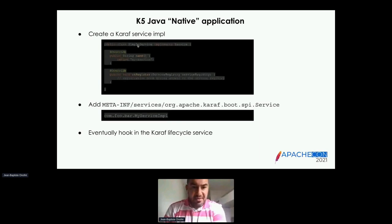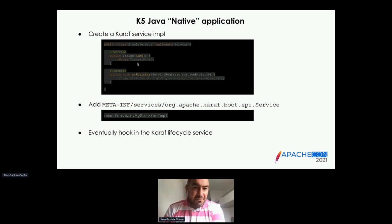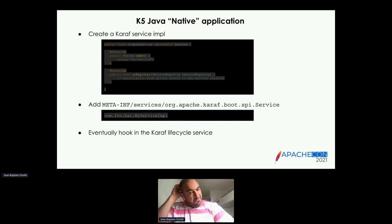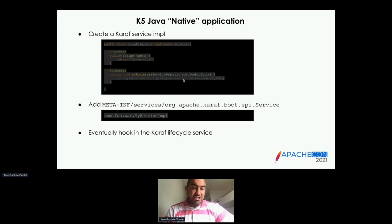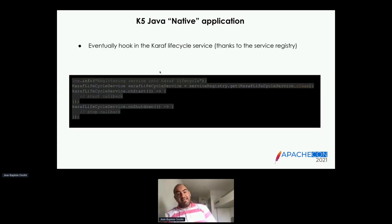Here is an example of a pure Karaf 5 service. You implement a simple service class that implements the Service interface provided by Karaf 5, overriding the name method and the onRegister method. To auto-load the service, in the META-INF/services folder you add a file named org.apache.karaf.boot.service.Service and list the full qualified name of the implementation class. Using the service registry, you can access the Karaf 5 lifecycle and add start/stop callbacks.